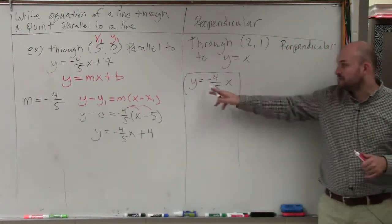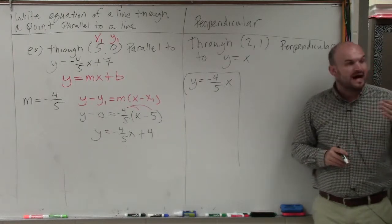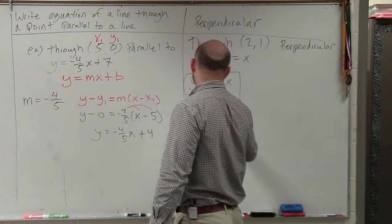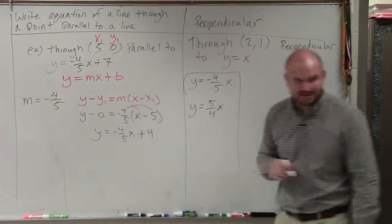Let's just pretend my original equation was negative 4/5 x. The opposite reciprocal slope of that would be a positive 5/4 x, OK?